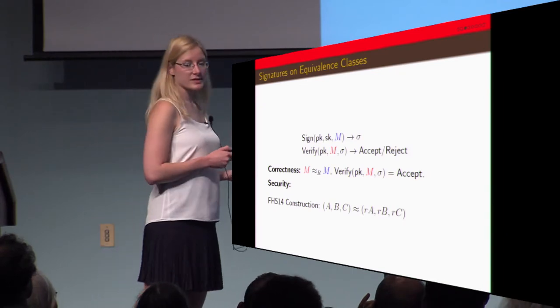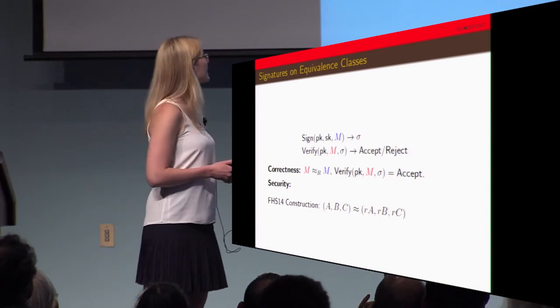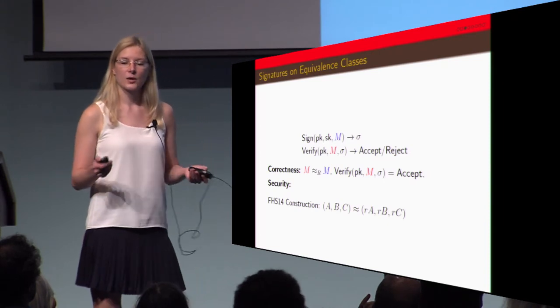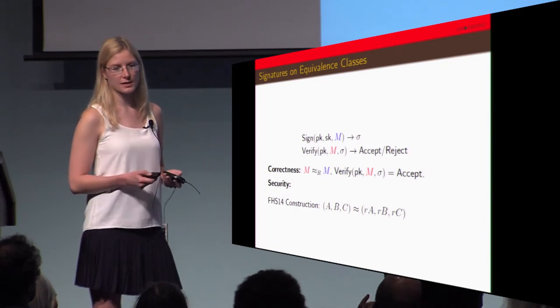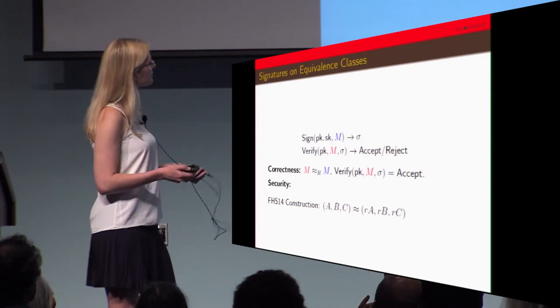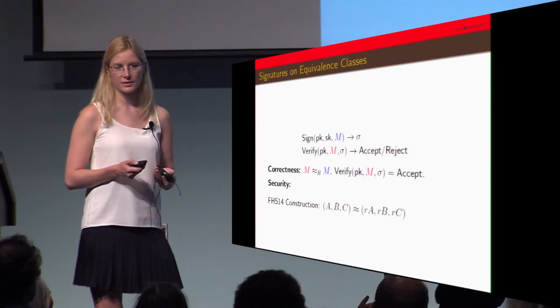There's an interesting construction for this in the FHS14 paper. In that case basically we're just looking at vectors of group elements and the equivalence class is multiplication by a scalar. There are some very nice results in this paper actually.